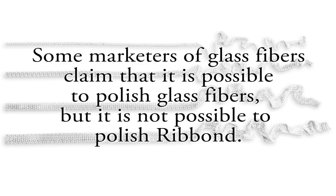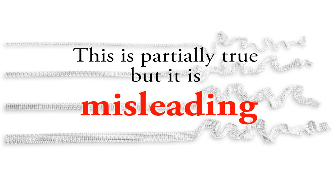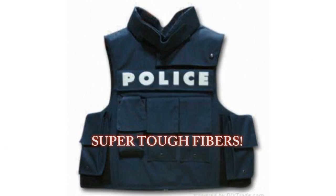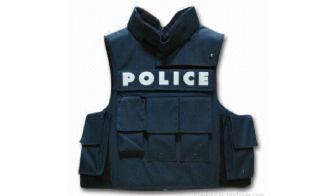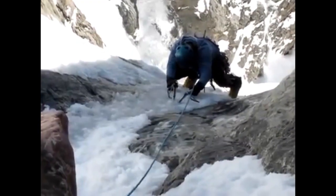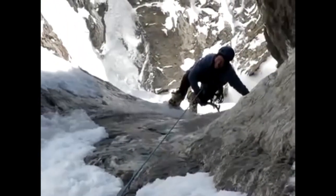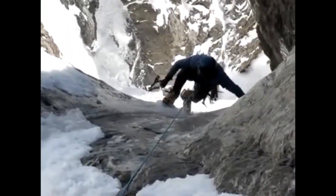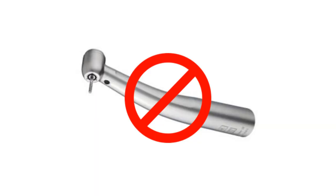Some marketers of glass fibers claim that it is possible to polish glass fibers but not Ribond. This is partially true, but it is misleading. Because glass fibers are brittle, they can be cut with a bur at the same rate as composite resin, leaving a smooth surface. Ribond is a fracture-tough material and a bur will not cut it at the same rate, resulting in fuzzy exposed fibers. However, polishing really means cutting fibers. Just like you would not want to climb a mountain using a rope that has been cut, you would not want to reinforce resins with cut fibers. It is not a good idea to polish any type of fibers and expect them to effectively reinforce composite resins.